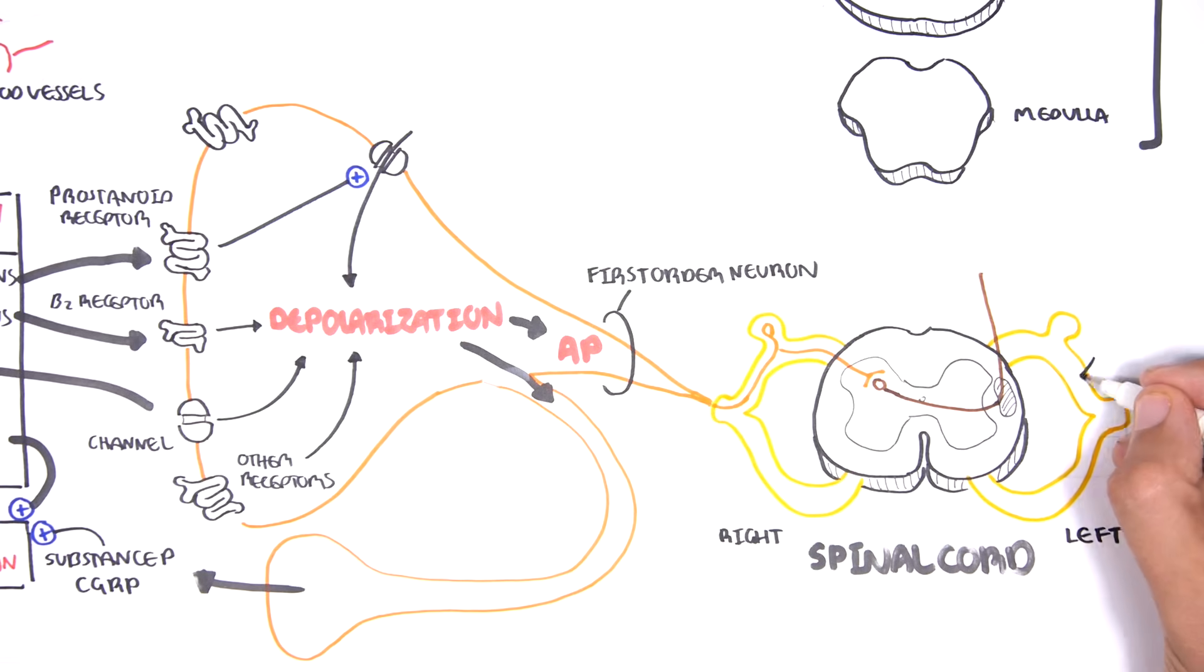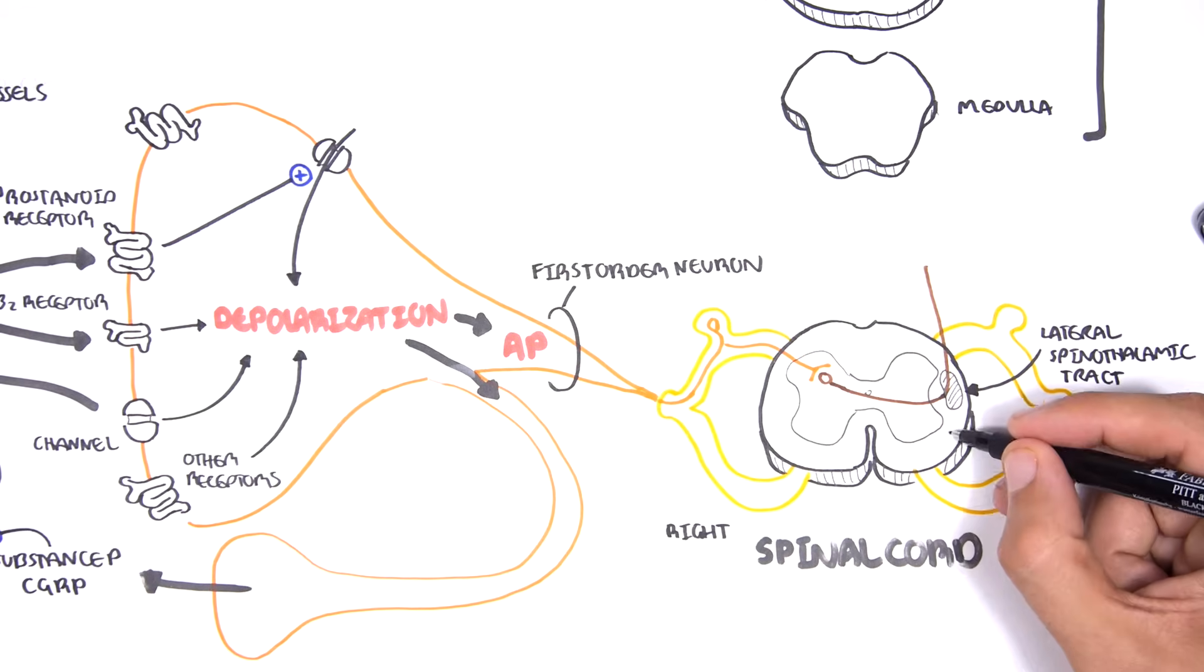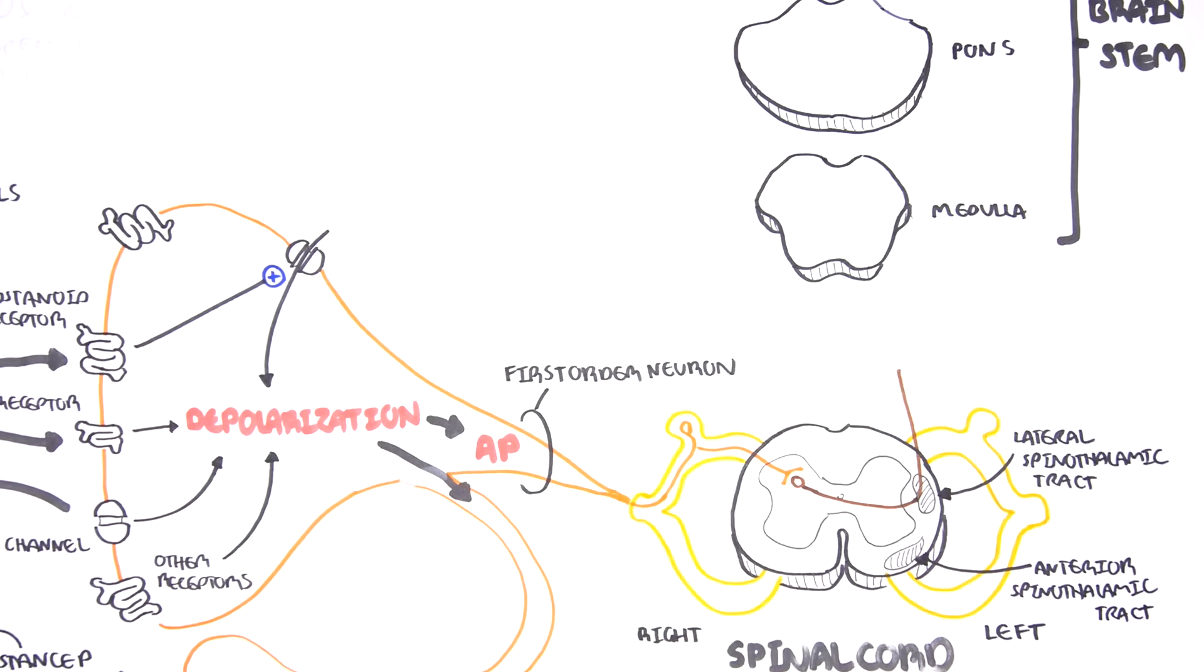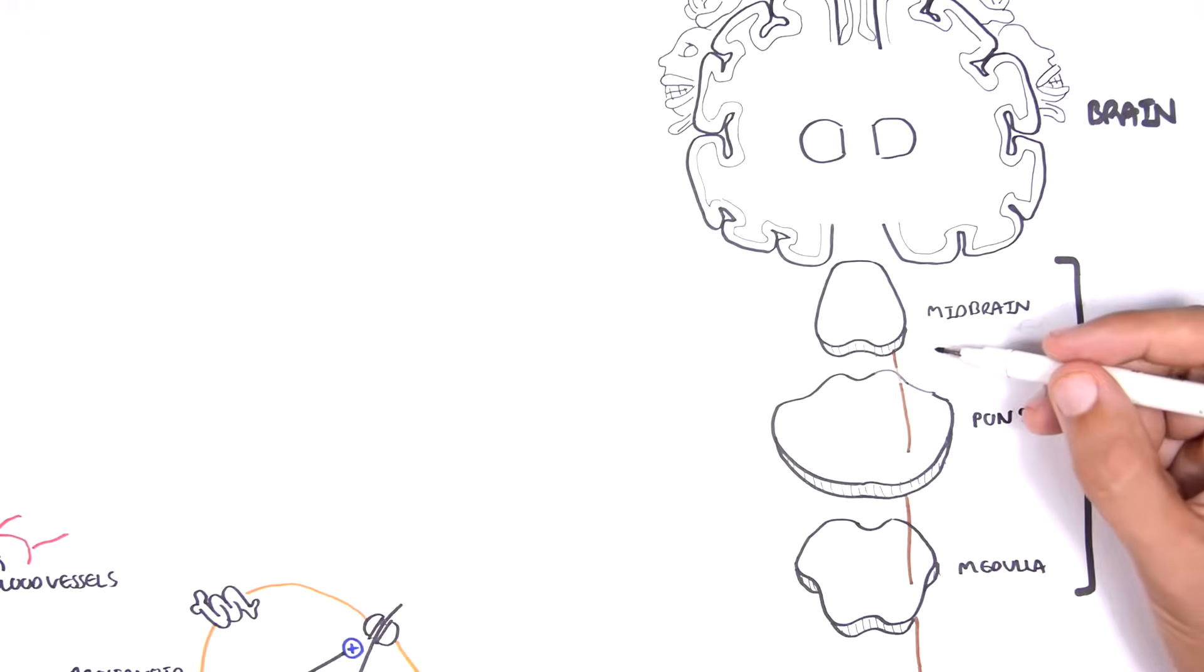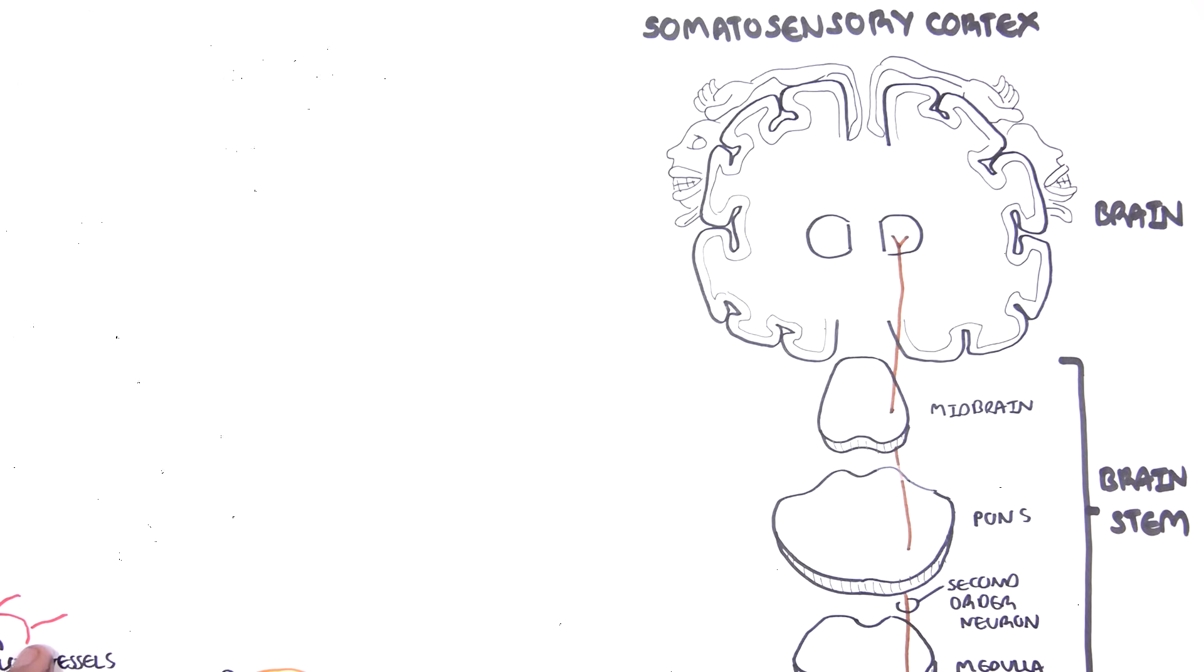The second order neuron will cross over to the other side from the right to the left and will enter what's called the spinothalamic tract. You have two spinothalamic tracts, the anterior and the lateral spinothalamic tract. The second order neuron will travel up towards the brain, past the brainstem and terminate at the thalamus.